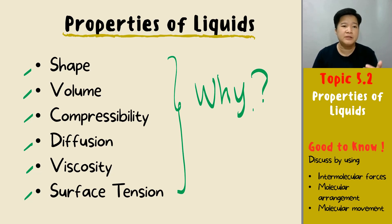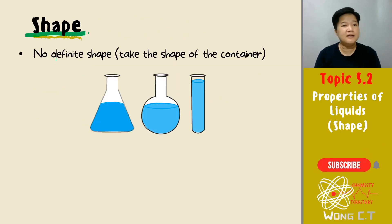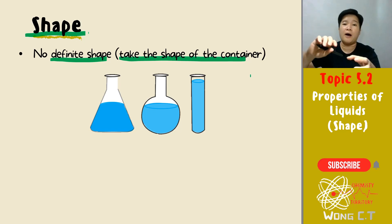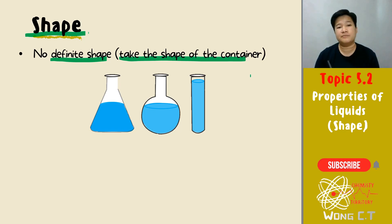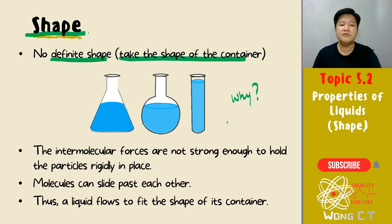First and foremost, let's look at shape. Everybody knows that liquid doesn't have a defined shape — it will take the shape of the container. That's why when you have a bottle of carbonated drink and you pour it into your cup, it will take the shape of the cup. But the question is: why doesn't liquid have a definite shape?